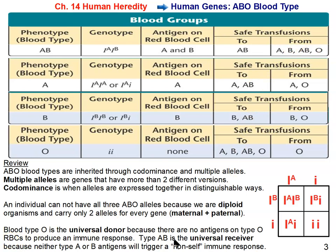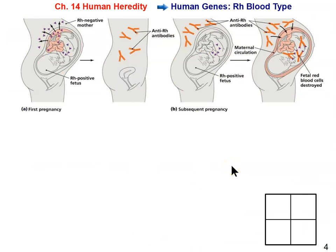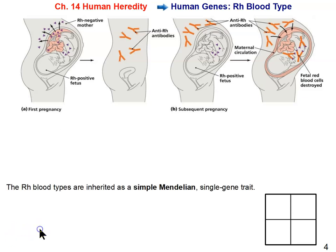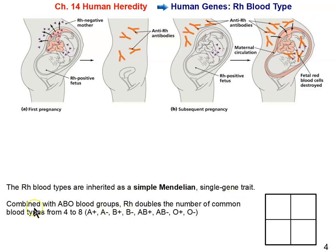You may have heard that you can be A positive or A negative — that has to do with another protein on red blood cells known as the Rh factor. It's called Rh, short for rhesus monkeys, because it was first discovered in rhesus monkeys. The Rh blood type is inherited as a simple Mendelian single-gene trait, much easier to understand than ABO types. When combined with ABO blood groups it doubles the number of blood types, and you must pay attention to the Rh factor during blood transfusions.